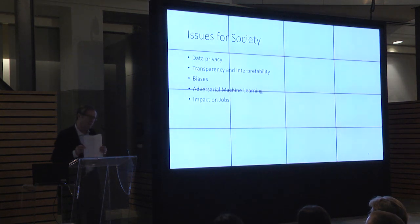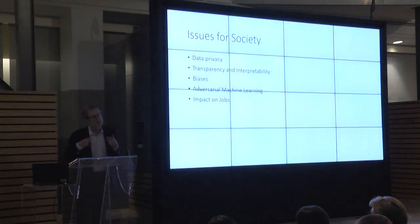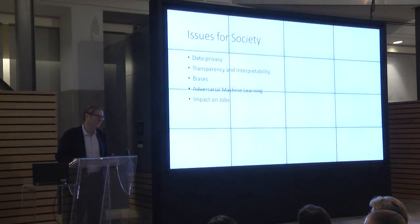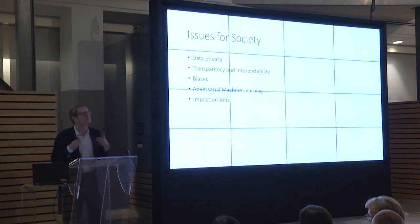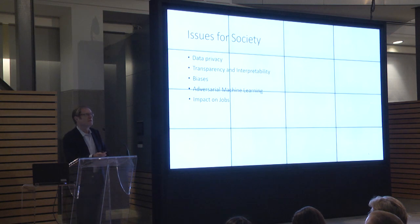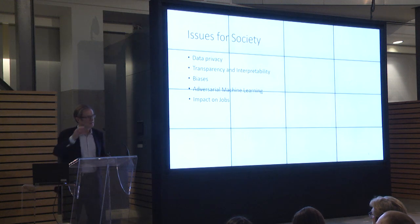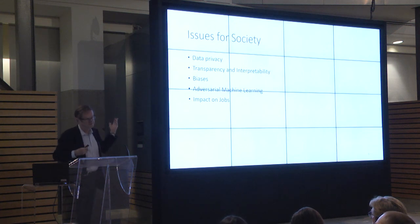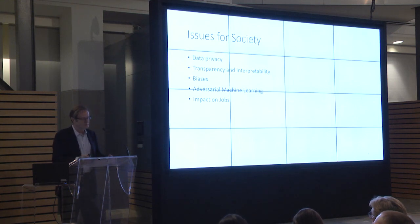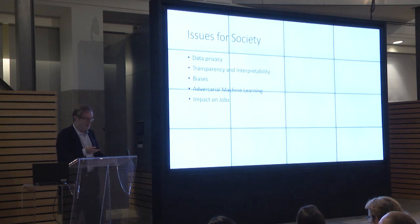Adversarial machine learning is a big issue. Machines are a lot easier to fool than human beings. A simple example is driverless cars — if you want to fool a driverless car, you might post a sign at the side of the road with particular colors, and the car comes along, reads the sign, and does something you don't want it to do. A human being would not be fooled by that sign — they'd recognize it as incorrect and ignore it — but that's not necessarily what the driverless car will do, and it can lead to all sorts of bad outcomes.